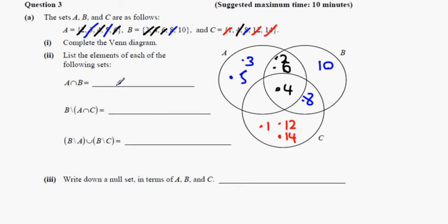List the elements of each set. A intersection B is this region here, so it's going to be 2, 4 and 6.